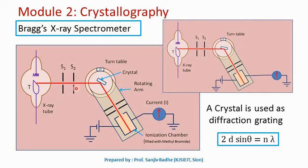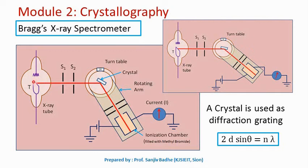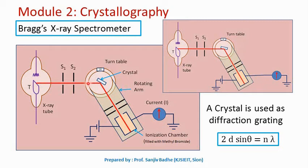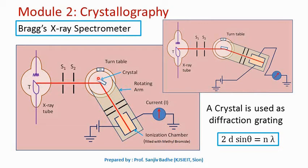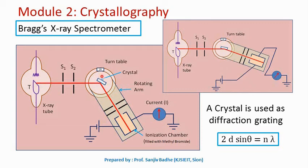This is the diagram showing the construction of Bragg's X-ray spectrometer. In this apparatus, monochromatic X-rays are obtained from the X-ray tube. When high-speed electrons strike the target having high atomic number and high melting point, X-rays are given out. These X-rays are made to pass through two slits S1 and S2 in order to get a fine beam of X-rays. The purpose of these two slits is to get a narrow beam. This narrow beam of X-rays is made incident on a crystal used as a reflection grating. This crystal is mounted on a circular turntable.